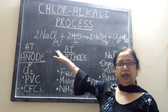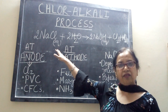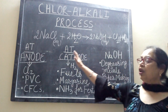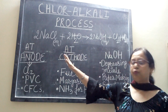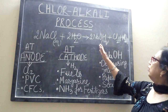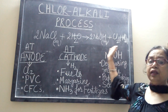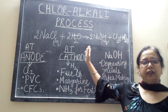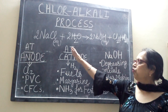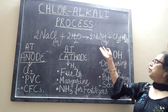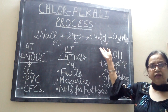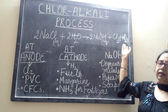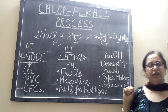When we pass electricity through this brine, electrolysis takes place and there are three products which we obtain: sodium hydroxide, chlorine gas, and hydrogen gas.